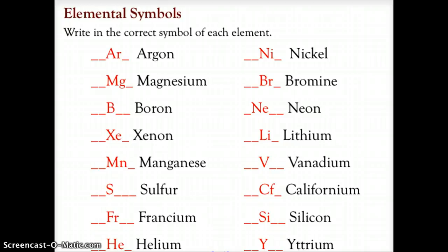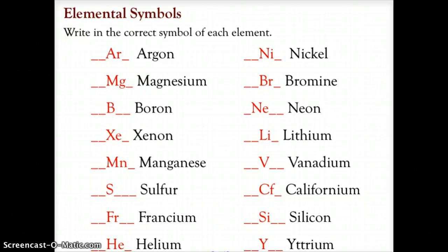Here is the list of elements and their appropriate symbols from the periodic table. Please check your answers: argon — capital A, lowercase r; magnesium — capital M, lowercase g; boron — capital B; xenon — capital X, lowercase e; manganese — capital M, lowercase n. Be careful you did not confuse magnesium and manganese. Sulfur — capital S; francium — capital F, lowercase r; helium — capital H, lowercase e; nickel — capital N, lowercase i; bromine — capital B, lowercase r; neon — capital N, lowercase e; lithium — capital L, lowercase i; vanadium — capital V; californium — capital C, lowercase f; silicon — capital S, lowercase i.